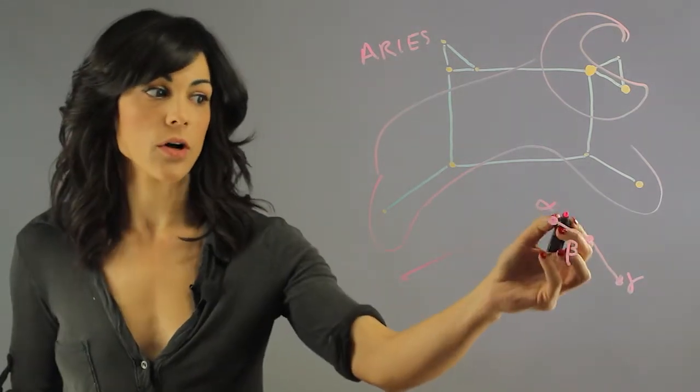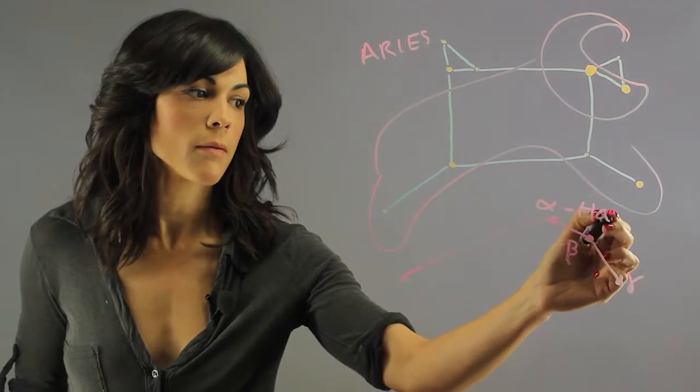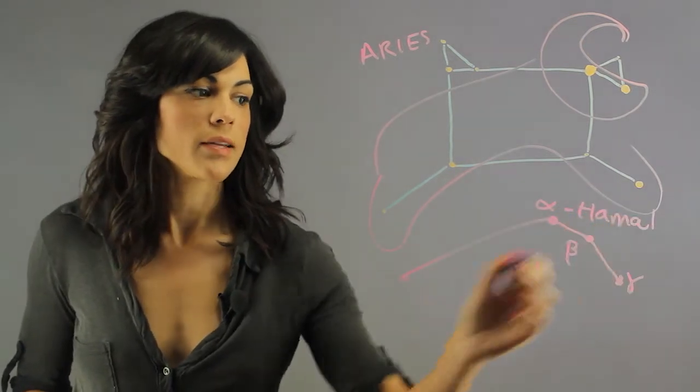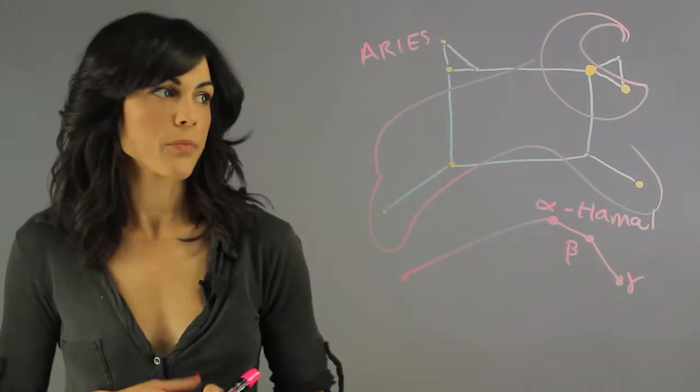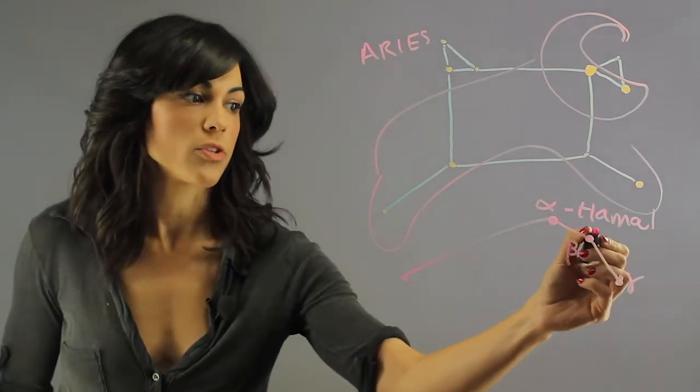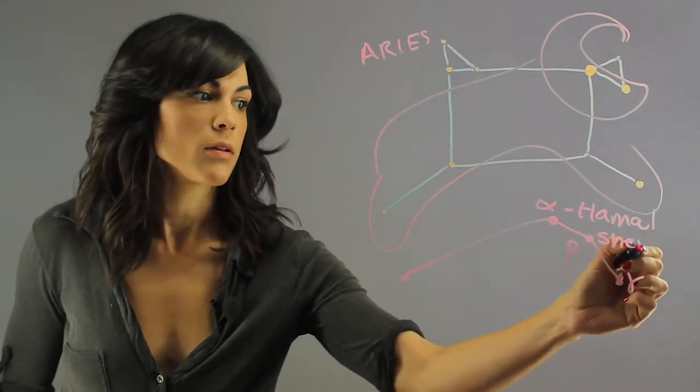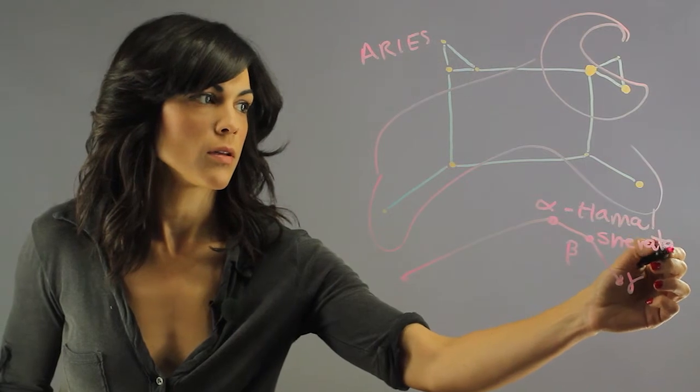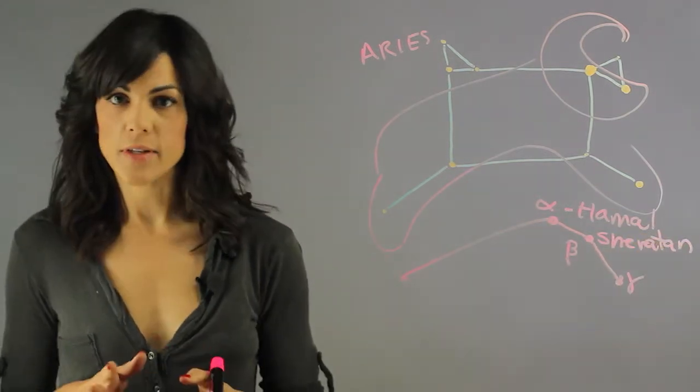So the alpha star is a very famous star called Hamal, and it's 66 light years away. Beta is Sheraton, and it's 59 light years away.